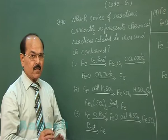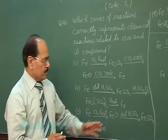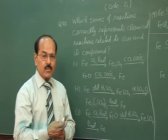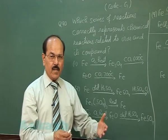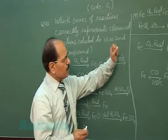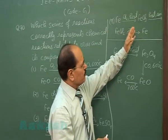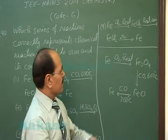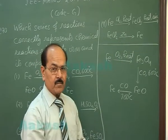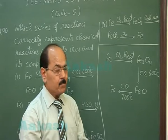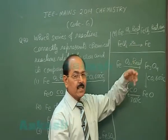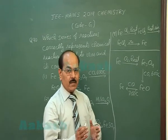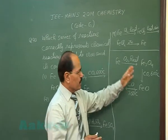Ferrous sulfate on heating gets hydrolyzed to ferric oxide; sulfur dioxide and sulfur trioxide are evolved. The last option says iron is converted to ferric chloride, and ferric chloride when heated in presence of air gives ferrous chloride. This does not seem correct because ferric chloride when heated in the absence of air gets converted into ferrous chloride and chlorine. So the first option seems to be correct.